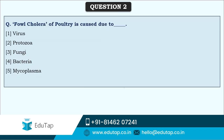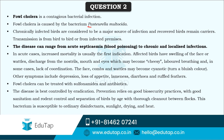Next comes the question: foul cholera of poultry is caused due to — as mentioned earlier, diseases in poultry may be caused by virus, bacteria, protozoa, or fungi. Foul cholera is caused by bacteria, specifically Pasteurella multocida. This is a very contagious bacterial infection. Chronically infected birds are considered the major source of infection, and sometimes recovered birds also remain carriers. Transmission is from bird to bird or from infected premises where these birds are kept.